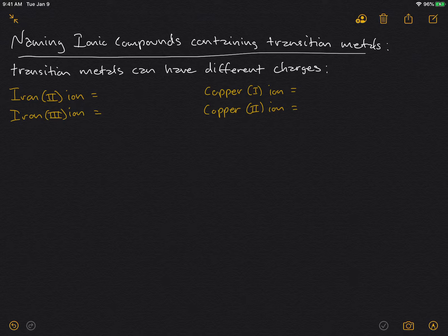When we're naming ionic compounds that contain transition metals, we always have to look to the anion to find out what the charge is on the metal, because transition metals can have different charges, also called oxidation states.